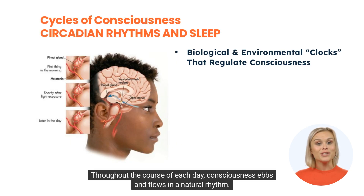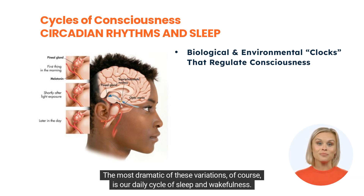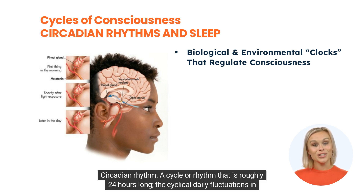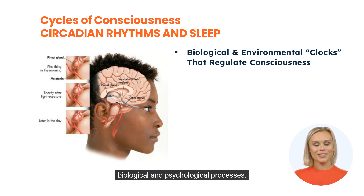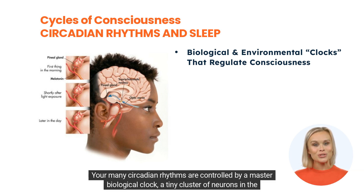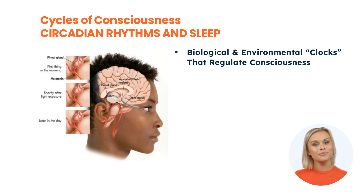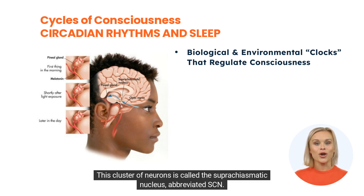Throughout the course of each day, consciousness ebbs and flows in a natural rhythm. The most dramatic of these variations is our daily cycle of sleep and wakefulness. Circadian rhythm: a cycle or rhythm that is roughly 24 hours long — the cyclical daily fluctuations in biological and psychological processes. Your many circadian rhythms are controlled by a master biological clock, a tiny cluster of neurons in the hypothalamus in the brain.